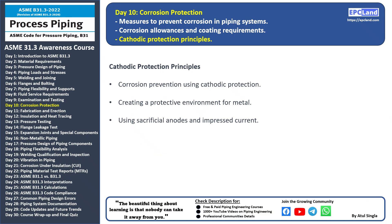Welcome back to our 30-day beginner course on ASME B31.3. Today we're delving into another important topic: cathodic protection principles. Corrosion is a common challenge for piping systems, but cathodic protection offers an effective way to prevent it. Cathodic protection involves creating a cathodic environment around the pipe, which helps safeguard the metal from corrosion. This is achieved by making the pipe the cathode — the negative electrode — in a corrosion cell.